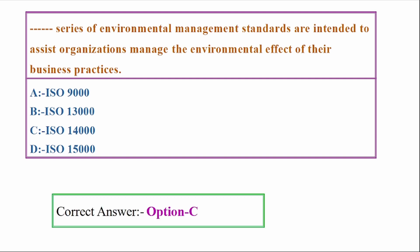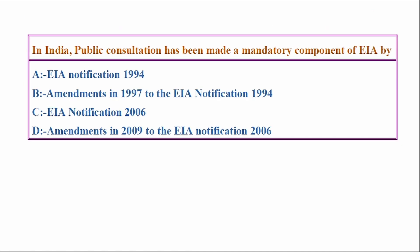Correct answer: Option C, ISO 14,000. In India, public consultation has been made a mandatory component of EIA by: Options - EIA Notification 1994, amendments in 1997 to the EIA Notification 1994, EIA Notification 2006, amendments in 2009 to the EIA Notification 2006. Answer: Option B, amendments in 1997 to the EIA Notification 1994.